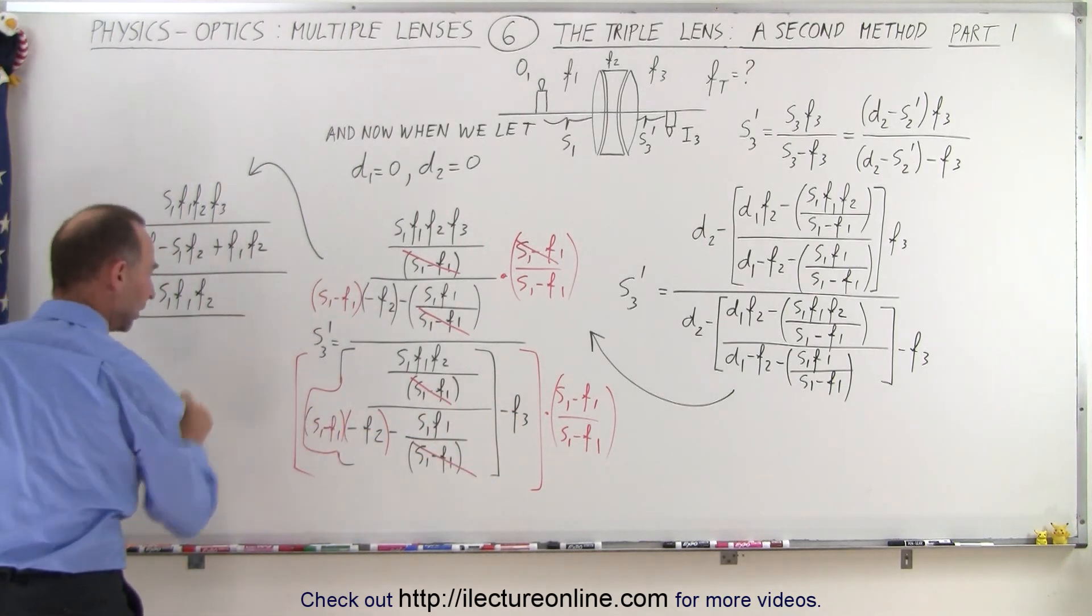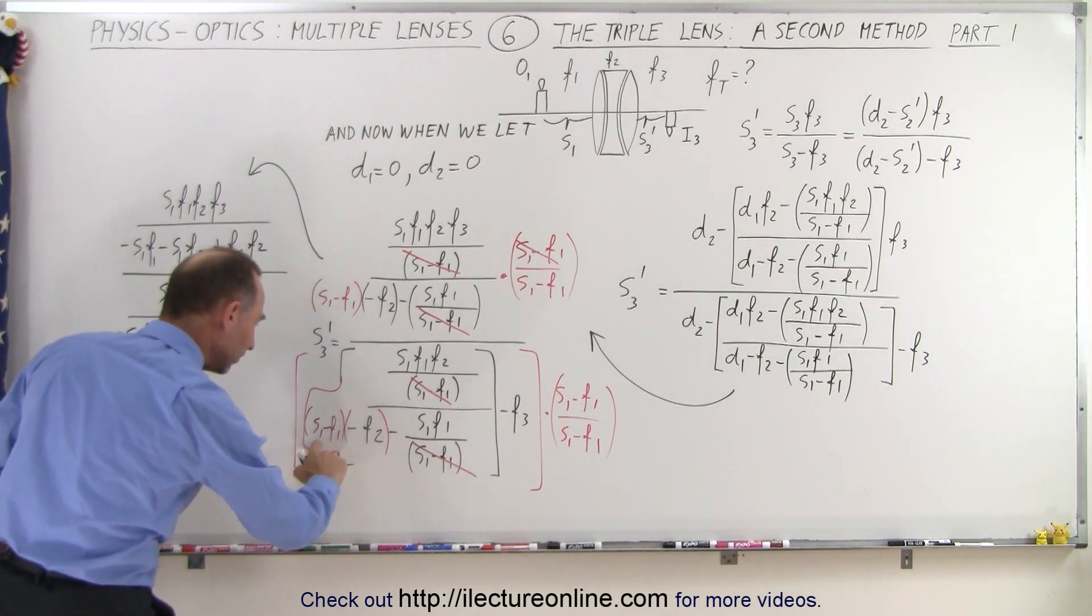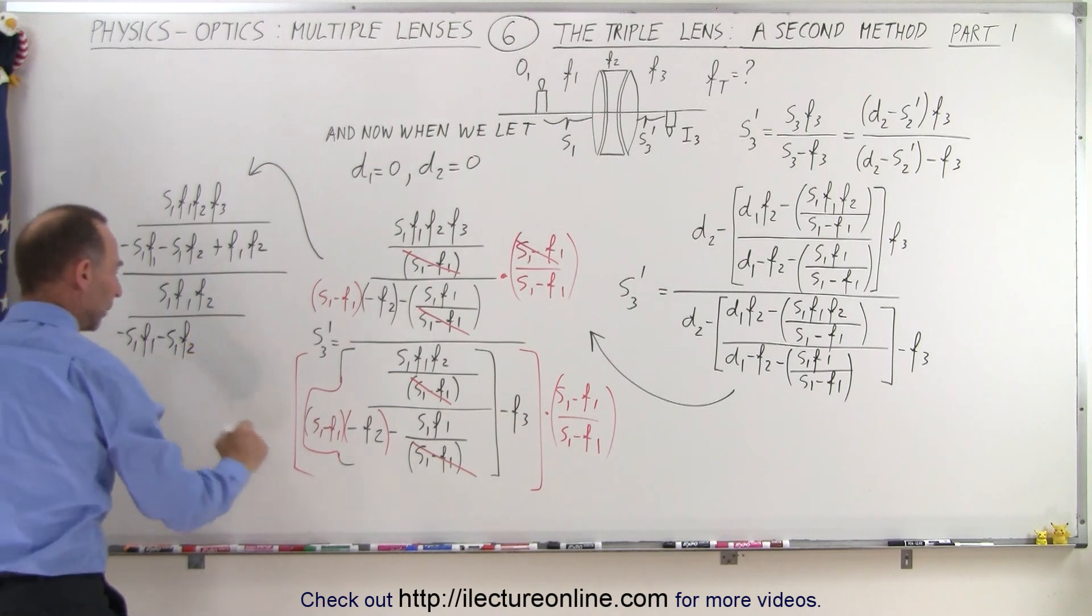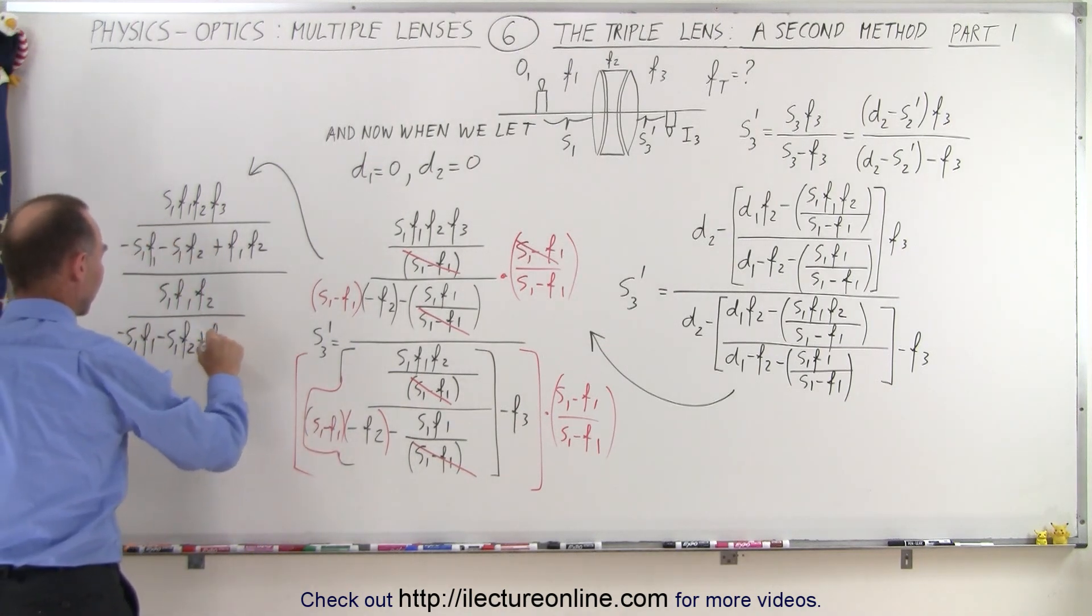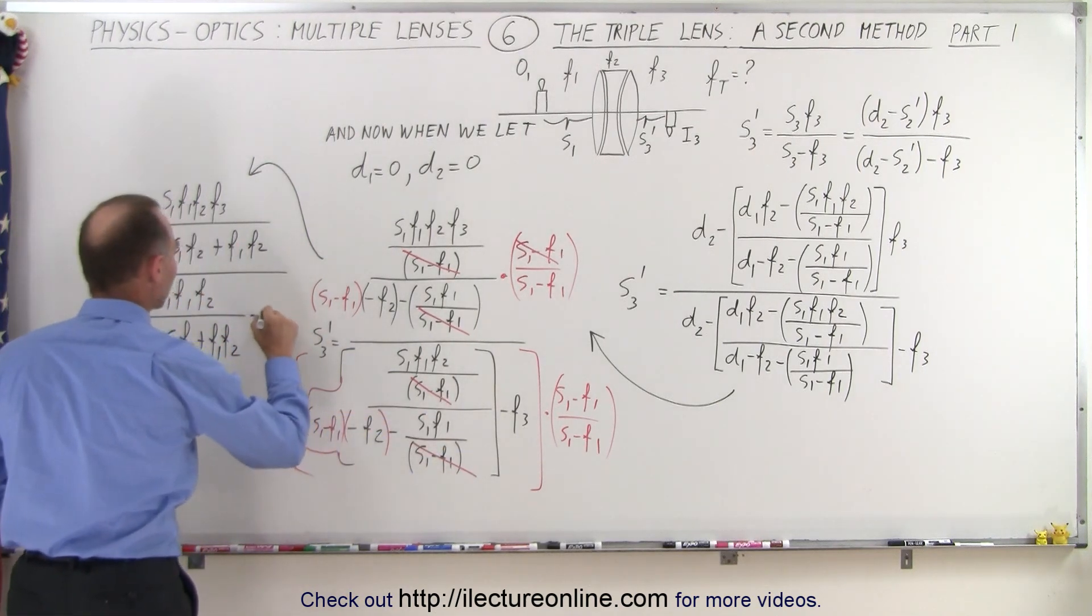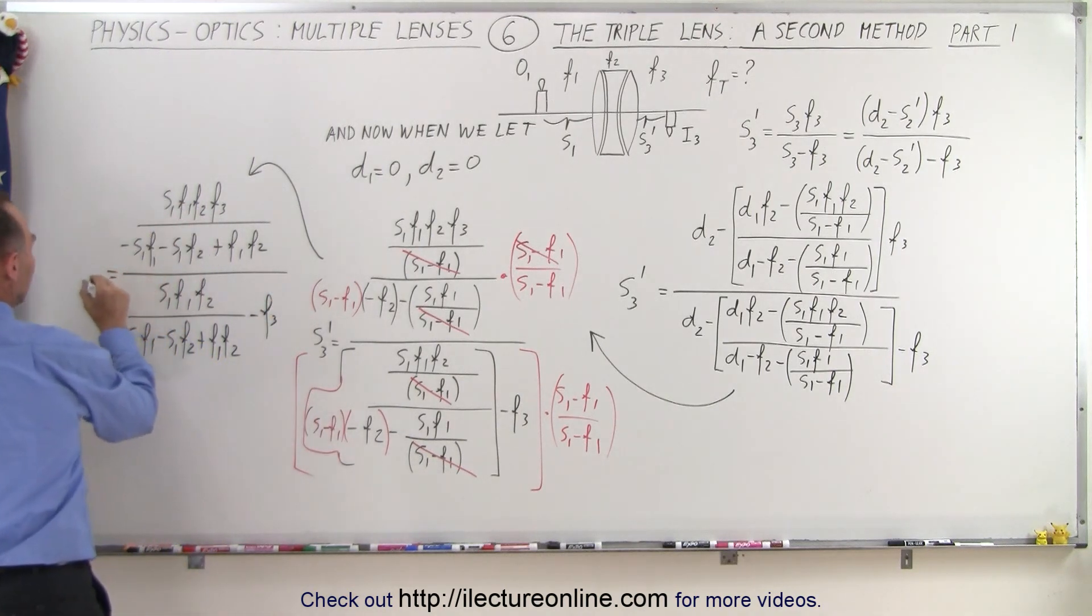In the denominator, we have, let's see here, we have a minus S1, F1. Oops, that should be F1. And then we have a minus S1, F2, and we have a positive F1, F3. Did I say F3? I meant F2. And we still have the minus F3 here. We have to put that there. And that is equal to S3 prime. So this is where we end up so far.